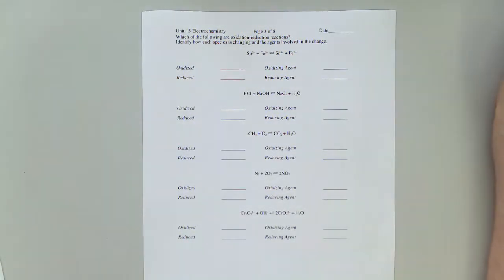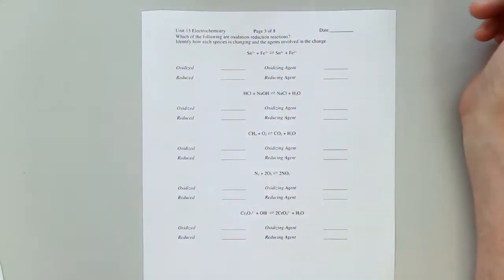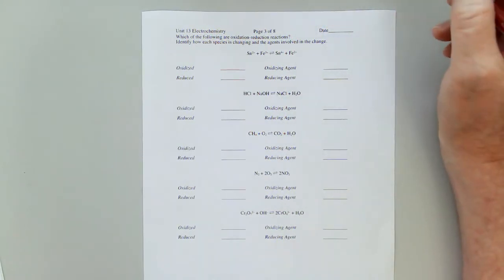Hey everyone, Morgan here. So we're going to be looking to see if we can identify species that are oxidized and reduced. And this is page three of the electrochemistry outline.